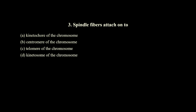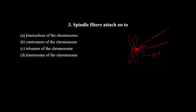The next question: spindle fibers attach onto what? The chromosome has a centromere, and at the centromere there will be a disc-shaped structure called the kinetochore. The spindle fibers get attached to this kinetochore for the separation.